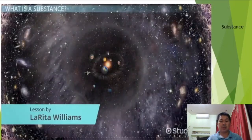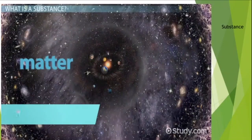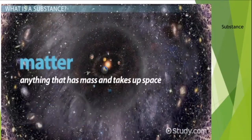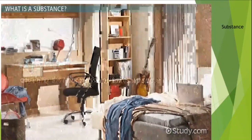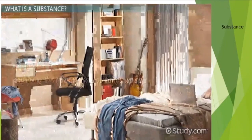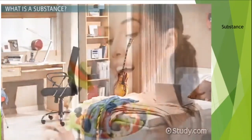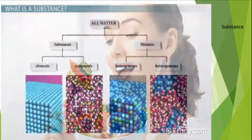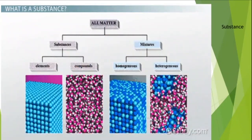Did you know that everything in the entire universe is some form of matter? Anything that has mass and takes up space is recognized as matter — that means matter is everything, including your desk, your clothes, your food, and even you. All matter, however, is not the same. Following a flow chart, the matter around us can be classified into one of two categories: mixtures or substances.